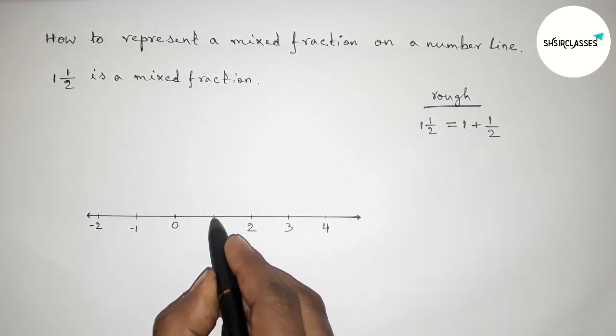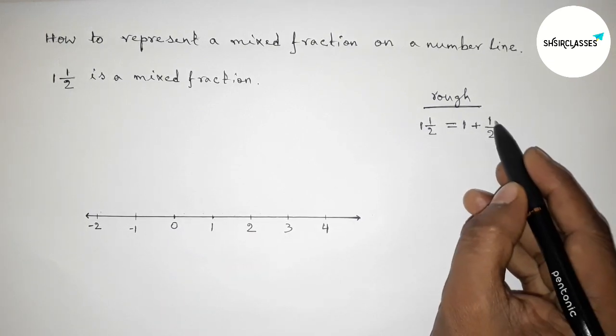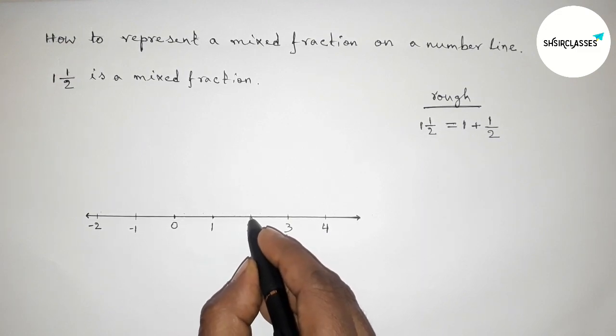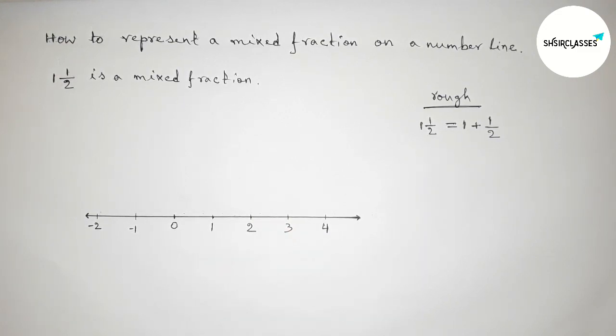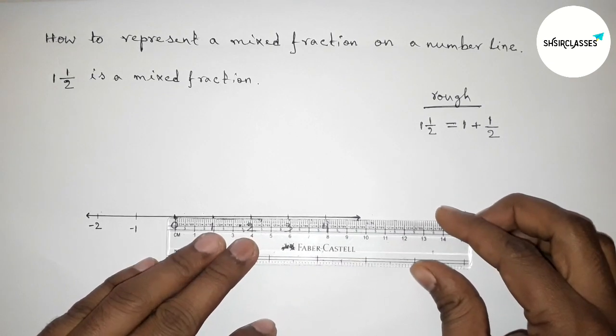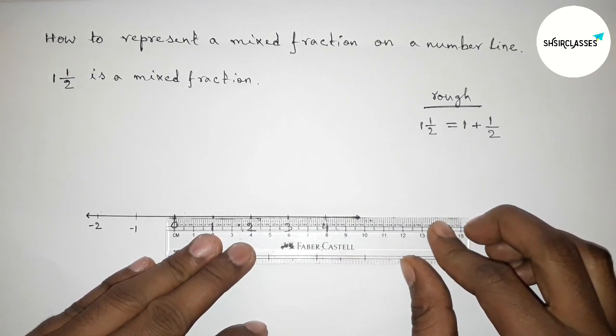So first here 1, between 0 to 1 this is 1, and now half will be between 1 to 2. So between 0 to 2 we have to represent 1 1/2, the mixed fraction. Now first I'm going to divide the length between 0 to 1 and 1 to 2.